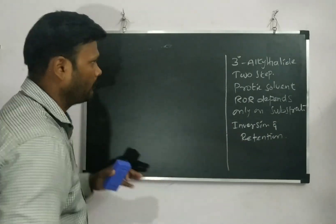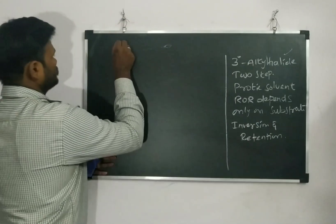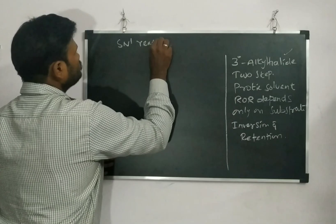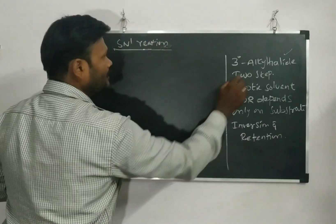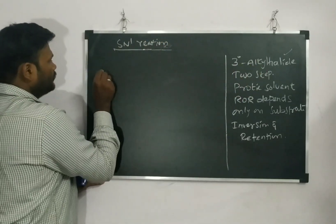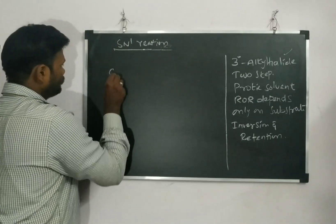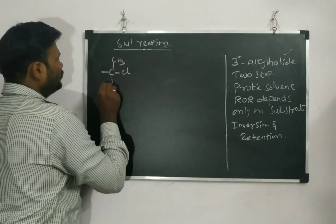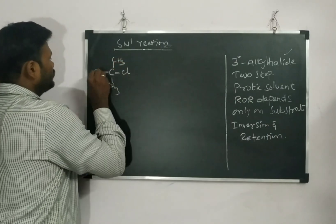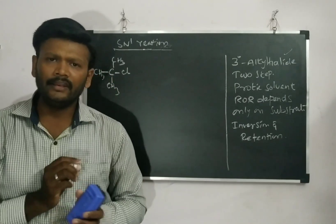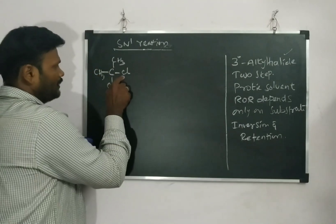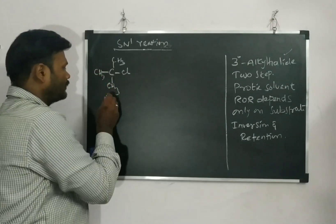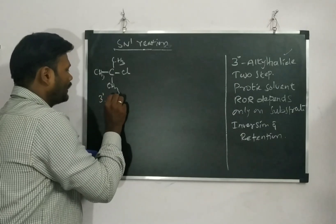Let's see them one by one, starting with the SN1 reaction. The first condition is a 3rd degree alkyl halide. So let us write it: we have a central carbon with Cl, and three CH3 groups attached — CH3, CH3, and CH3. How do you calculate the degree? The functional group is attached to a carbon, and that carbon is attached to 3 other carbons — that is what makes it a 3rd degree alkyl halide.